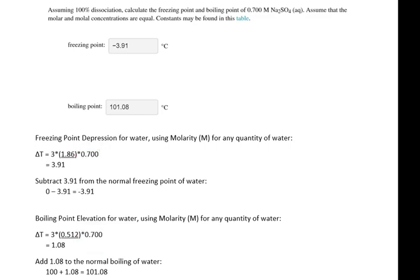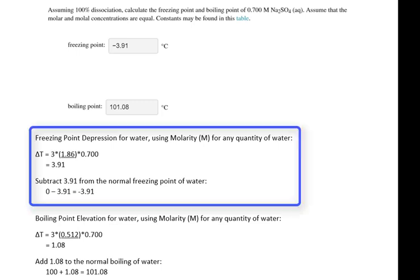For this formula, N is 3 because there's two sodiums and one sulfate in the formula. For the freezing point temperature change, the delta T is 3 times 1.86 times 0.7. Then we subtract 3.91 from zero to give us a new freezing point of negative 3.91.